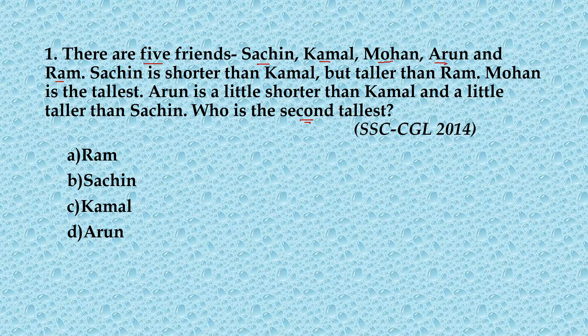Let us try and arrange them according to the sequence given. Sachin is shorter than Kamal but taller than Ram, so Ram is below Sachin in height. Mohan is the tallest, so obviously he will be right on top.